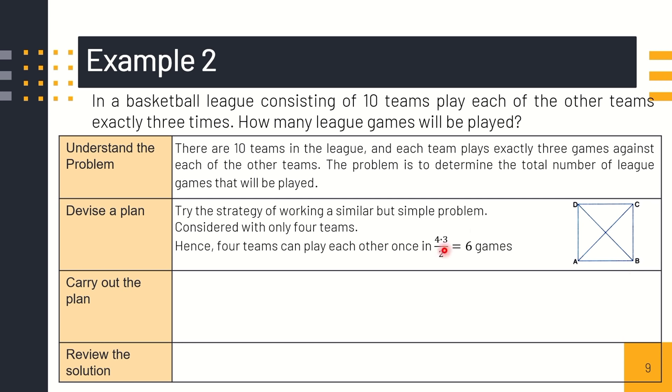We have twelve games. But because A-B and B-A are duplicated, it's only one game. Therefore, we need to divide. So four times three, that is twelve, divided by two, equals six games. So there are only six games.